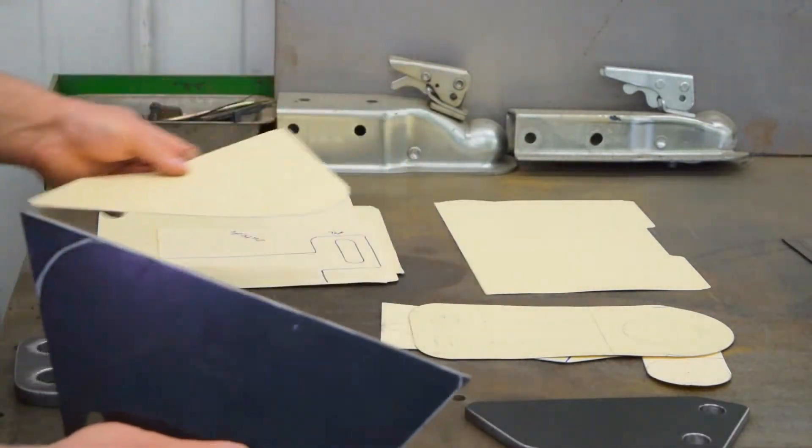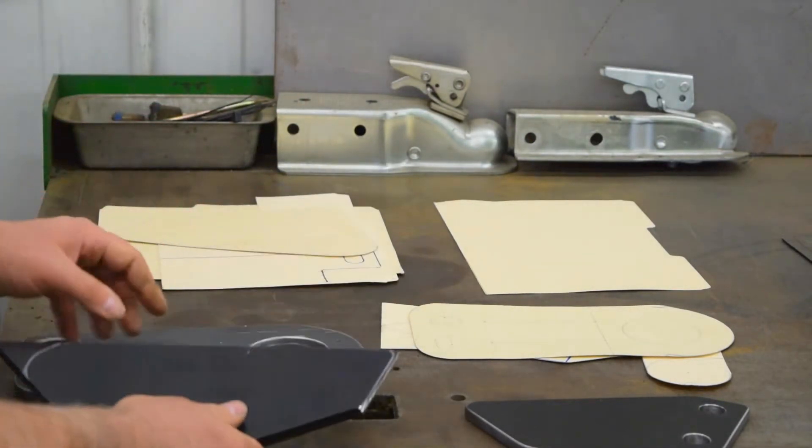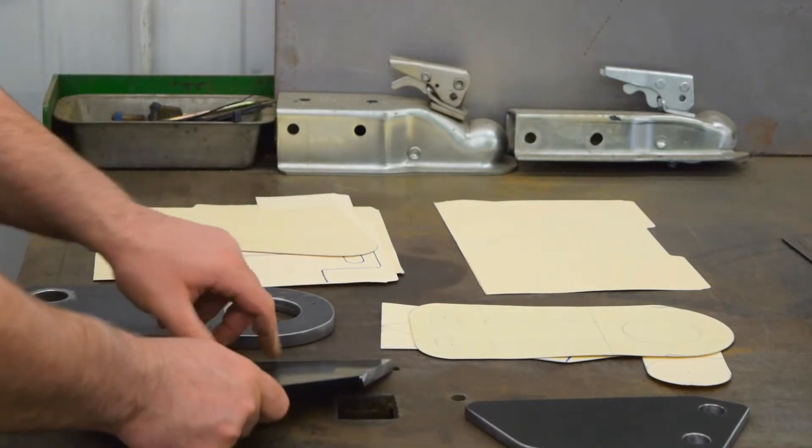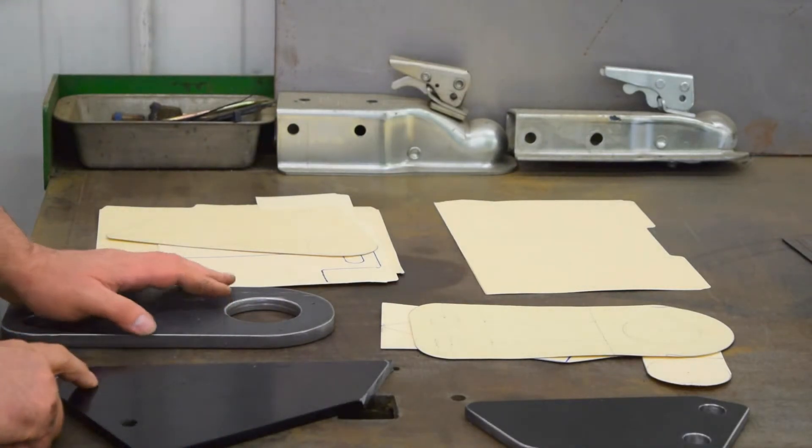So before I cut it with the plasma cutter I want to drill my hole, because if I don't, the plasma cutter will actually harden the steel to the point where it will be difficult to drill the hole.